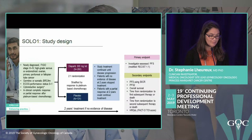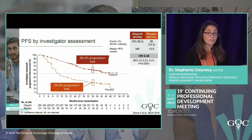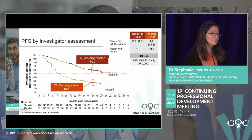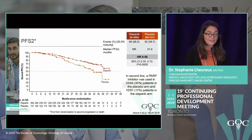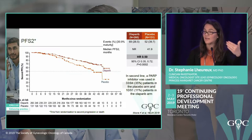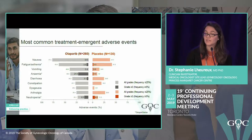The first-line results were very impressive. Patients on olaparib had 60% progression-free at 3 years, compared to only 30% in the placebo group — a big difference. Looking at PFS2, this benefit was maintained at the time of second recurrence, confirming a durable population benefit.